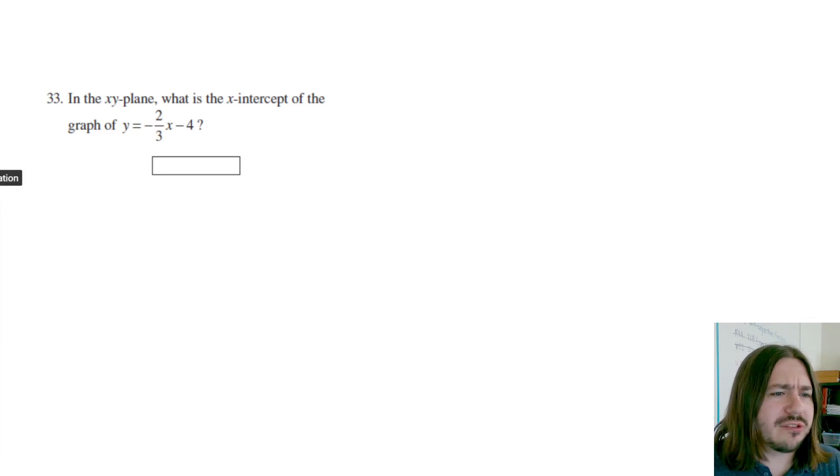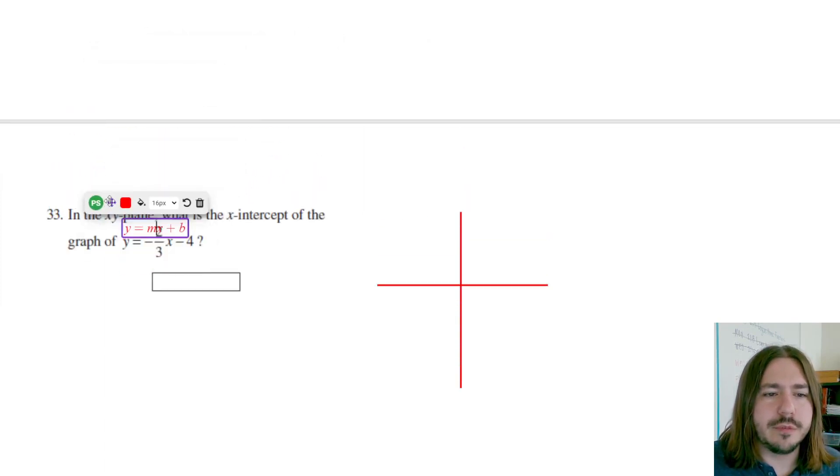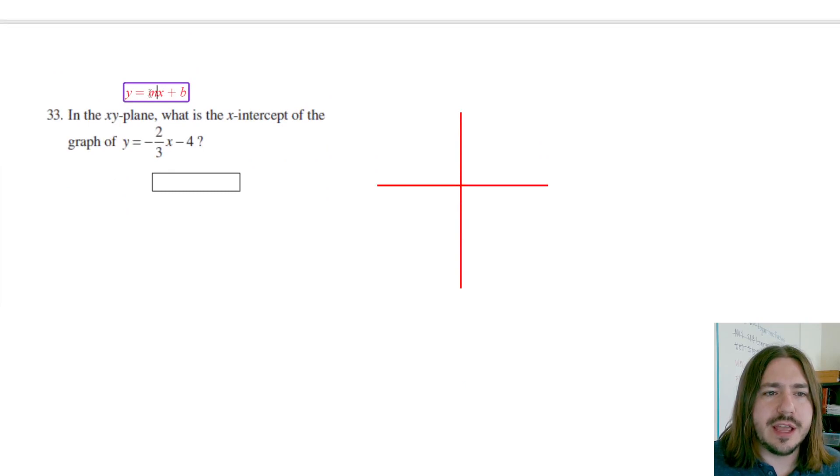You can think about this graphically. I think the best way to do this is actually algebraically though. Just to get an idea of what this graph looks like, this is a linear equation. The y-intercept is negative four. We know that because this is in a classic y equals mx plus b format. And in this format, the b value is the y-intercept and the m value is the slope.